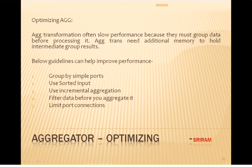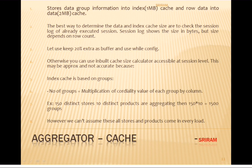The last optimization tip is to limit the number of connected input/output ports to reduce the amount of data the aggregator transformation stores in the data cache. Regarding cache sizing: the index cache default is 1 MB. For example, if 150 stores and 10 distinct products are aggregating, that gives 150 × 10 = 1,500 groups that need to be loaded into the index and data caches.